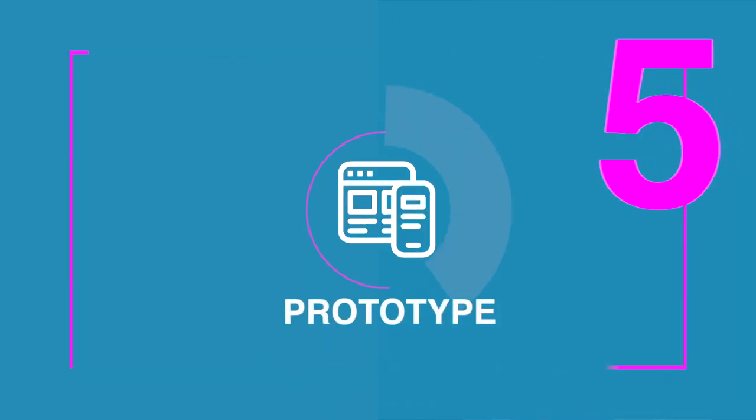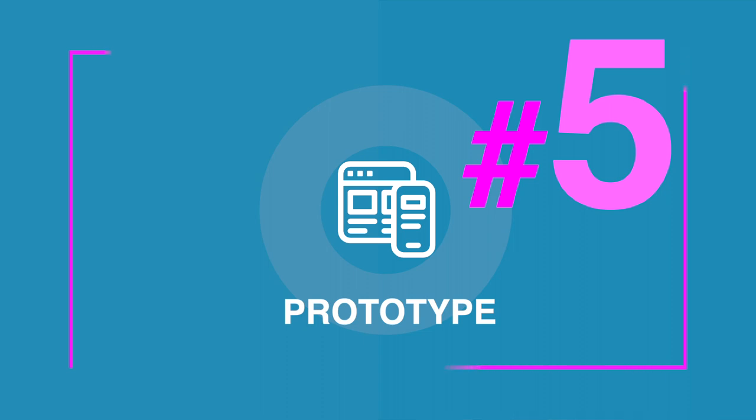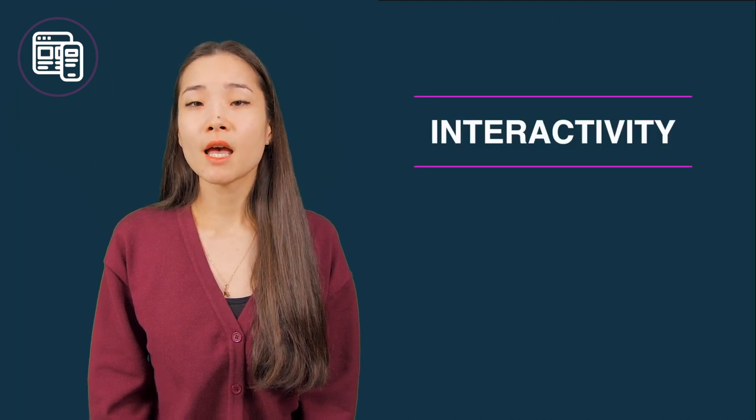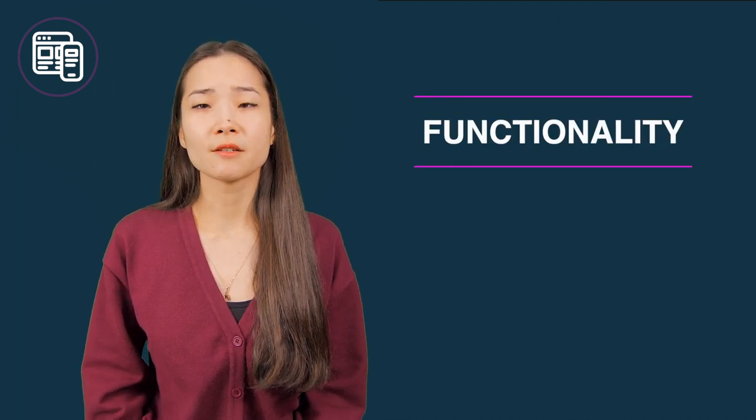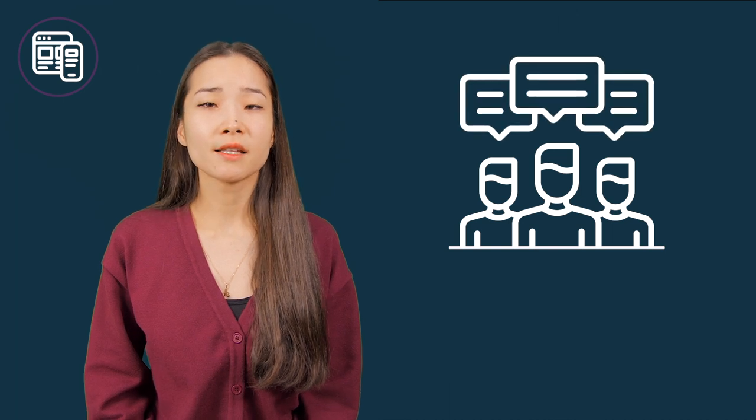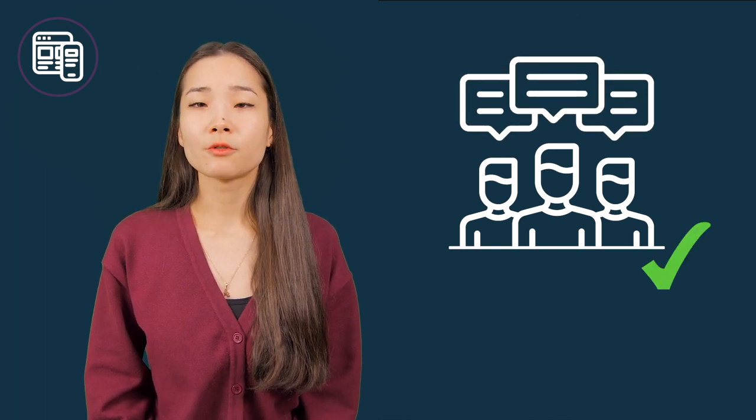Number five: prototype. Once the course mockup is done, you can start developing the prototype, which is a smaller version of the final product. The prototype will need to demonstrate how the course performs, meaning we will be able to assess its interactivity and overall functionality as if we were the end users. At this stage, you will be able to benefit from as much feedback as you need and get approval from your team before moving on to the project's final development stage.